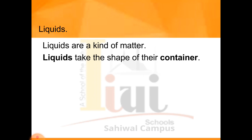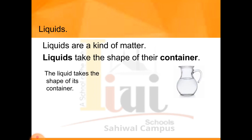There are two containers shown on page 91. First, you have a flask — the liquid takes the shape of the flask. Second, you have a fish bowl — the fish bowl is round, so water takes a round shape inside it. Liquids do not have their own fixed shape; they take the shape of whatever container they are placed in. Water is a liquid — you can put water into a fish bowl, and it will take the shape of that fish bowl.